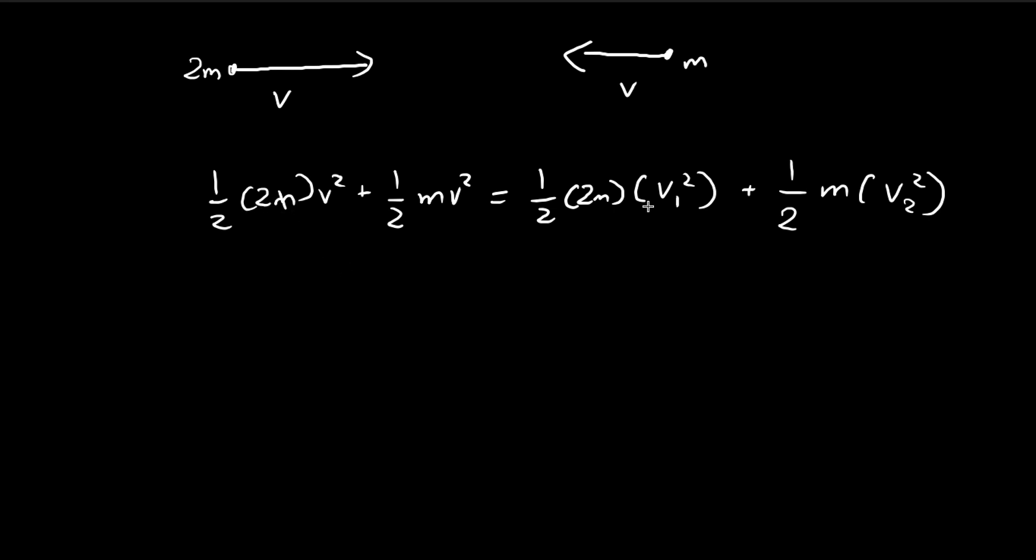So we can do a bit of simplification. So obviously the m's, they cancel out. So we have v1 squared plus 1 half v2 squared, and here we have 3 over 2 v squared. So this is one equation.